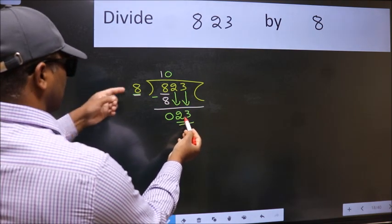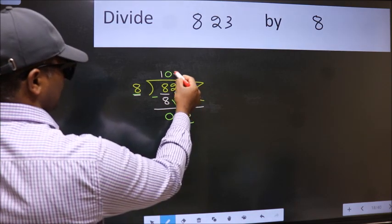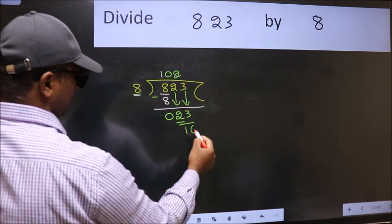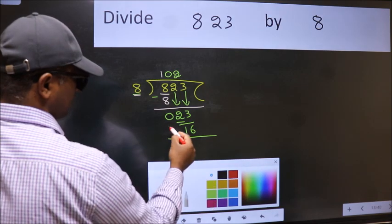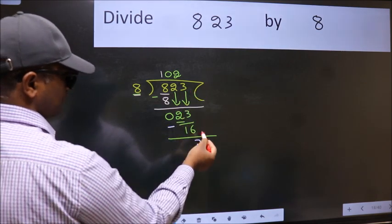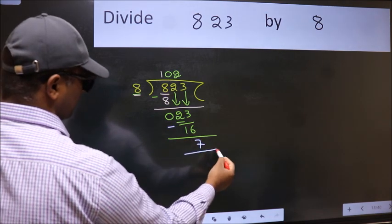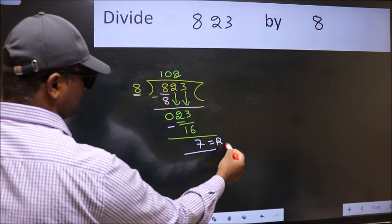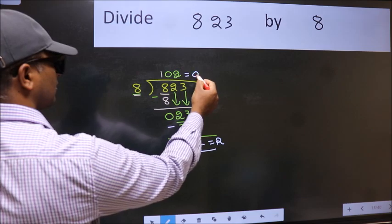A number close to 23 in the 8 table is 8 times 2 is 16. Now we subtract. We get 7. No more numbers to bring down, so we stop here. This is our remainder and this is our quotient.